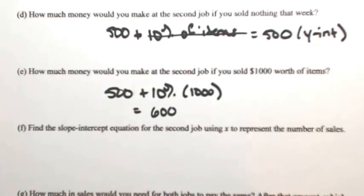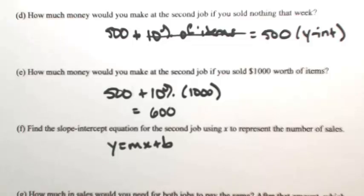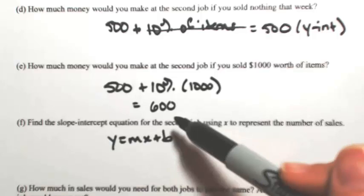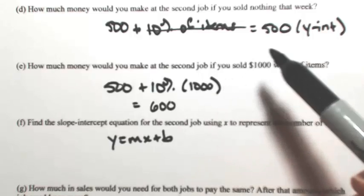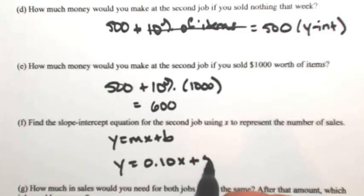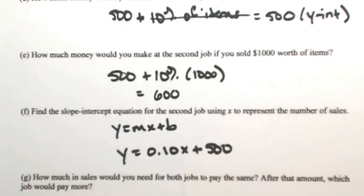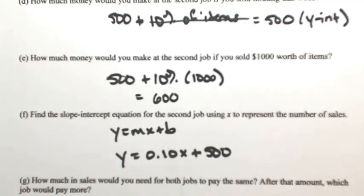So it seems like the second job is better for now. Let's generalize into a slope-intercept equation. The y-intercept is 500 because you get $500 when you sell nothing. Your slope is the 10% commission on whatever x is. So y = 0.10x + 500. You can check: if you sell nothing x is 0 so you still get $500; if you sell $1,000 you do 10% of 1000 plus 500, and everything matches.